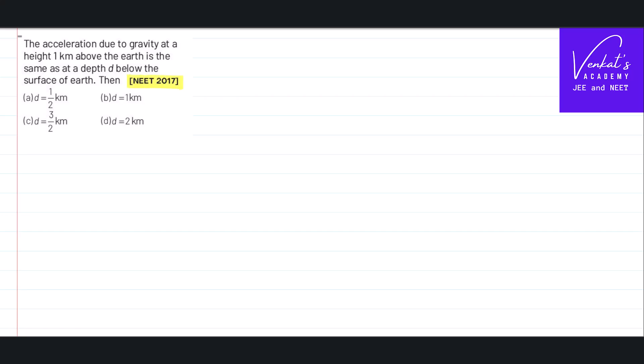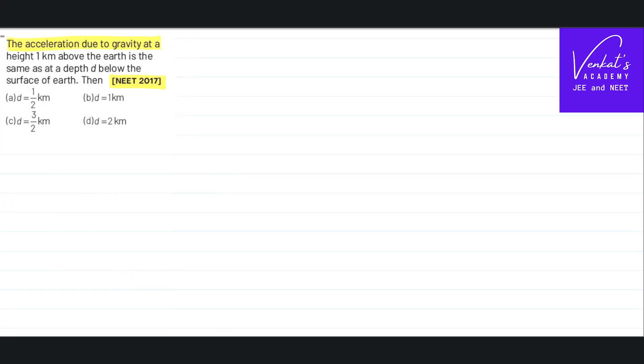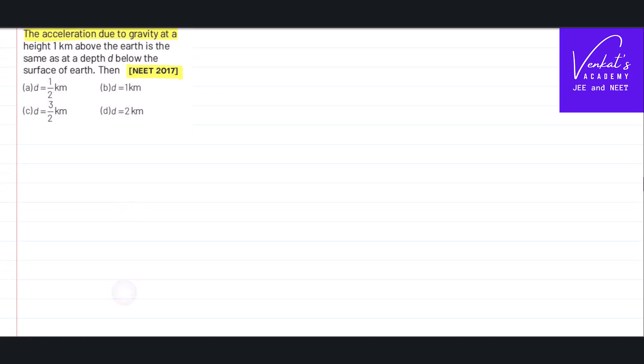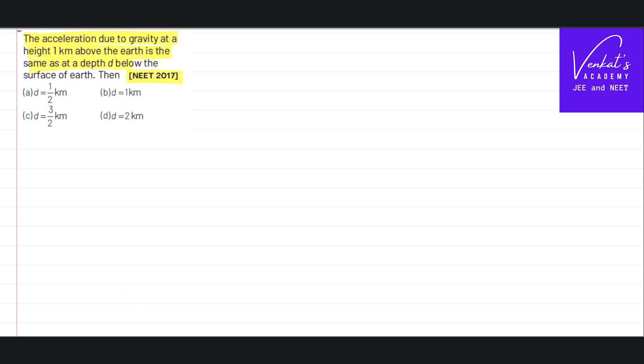This is the NEET 2017 question in gravitation. The acceleration due to gravity at a height 1 kilometer above the earth is same as at a depth d below the surface of the earth. Then that depth is how much?